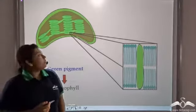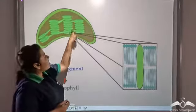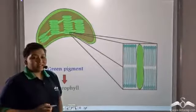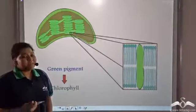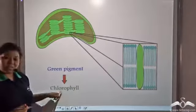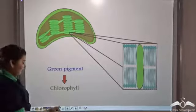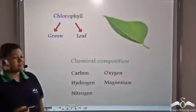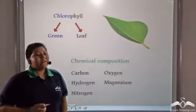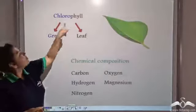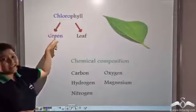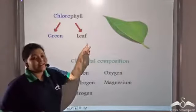Why are these grana green in colour? This is because the membrane of these grana contain green pigments known as chlorophyll. Chlorophyll means a green leaf: chloro means green and phil means a leaf.